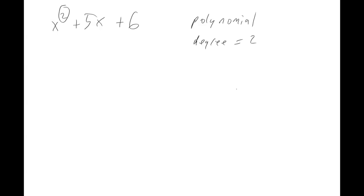We're basically learning two really important things today. They are what I call just normal factoring. Notice there is no greatest common factor in this — there's not a number that goes into all three terms. There's also not a difference of squares, because there are three terms instead of two.